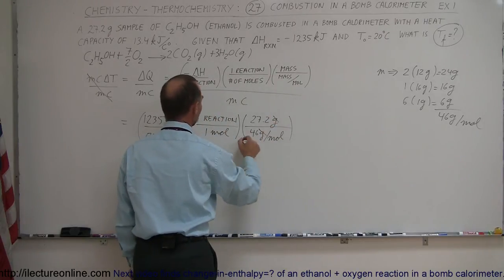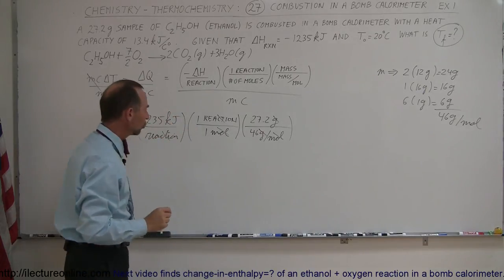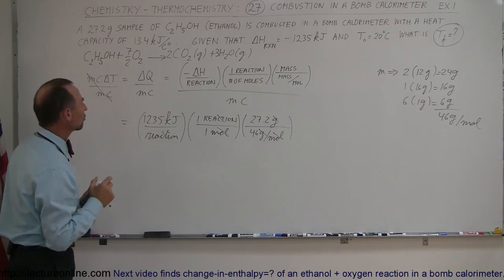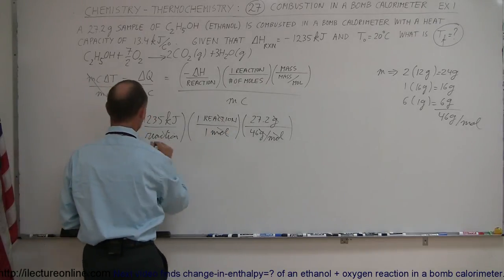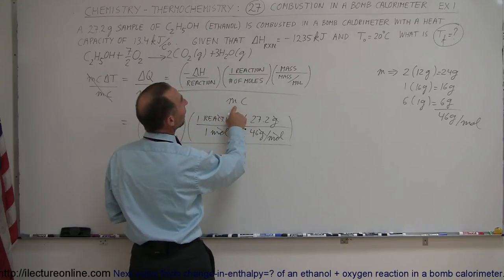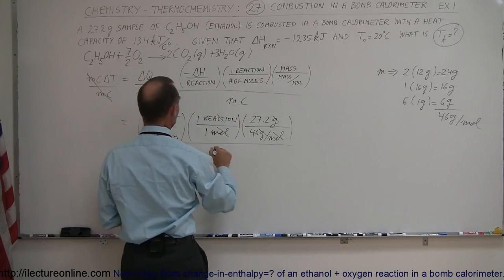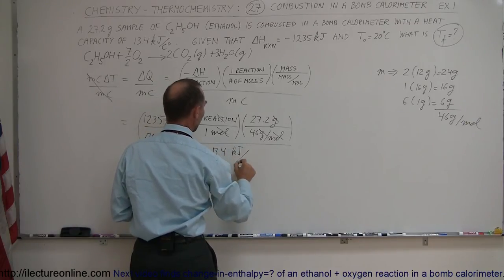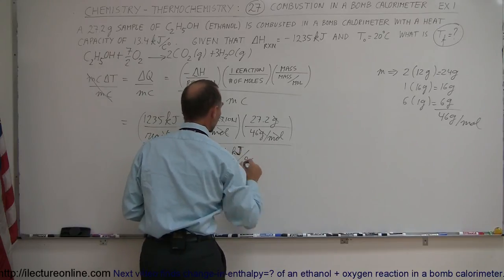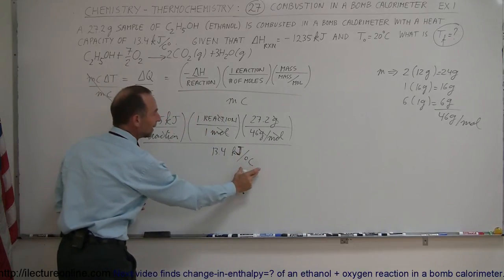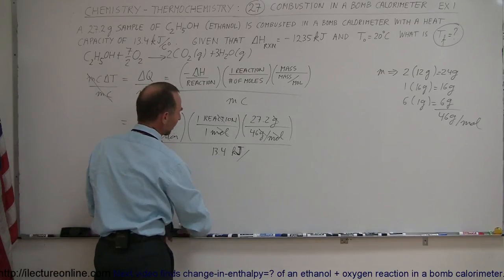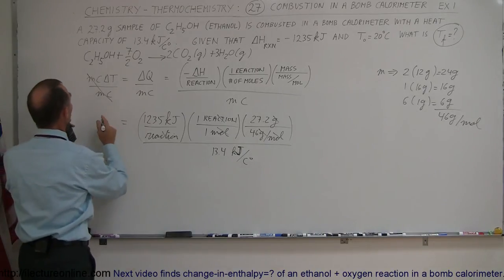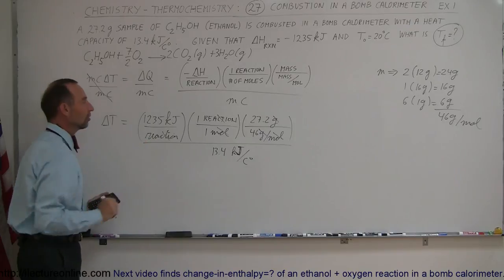Notice the grams cancel out, the moles cancel out, the reaction cancels out. We end up with kilojoules, and now we need a calculator to find out what the change in temperature is. We're missing one thing: divide by MC, can't forget that. The heat capacity of the calorimeter, 13.4 kilojoules per degree Celsius. The units will come out in Celsius degrees, which means the change in the temperature in the calorimeter will be equal to this number.